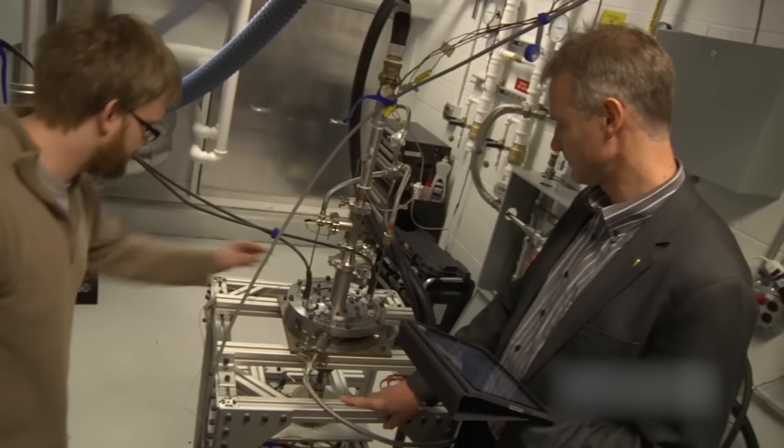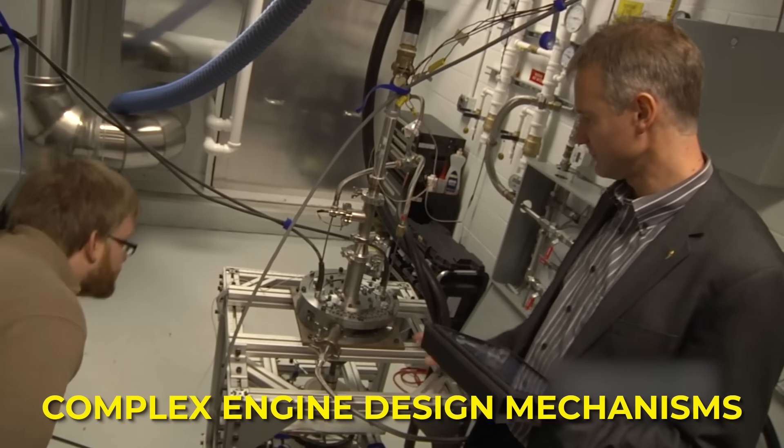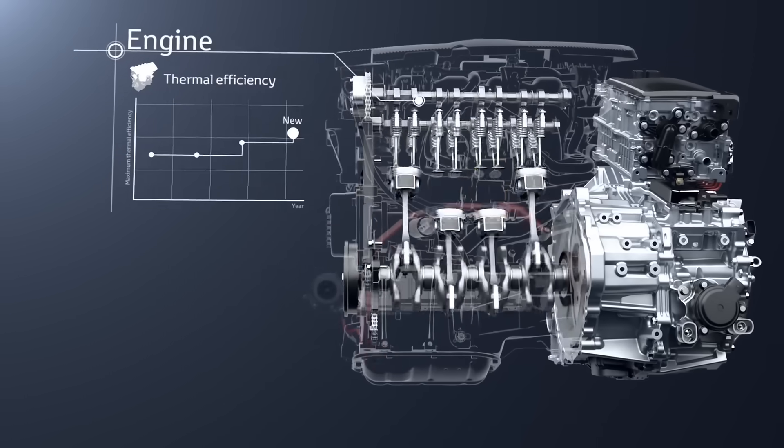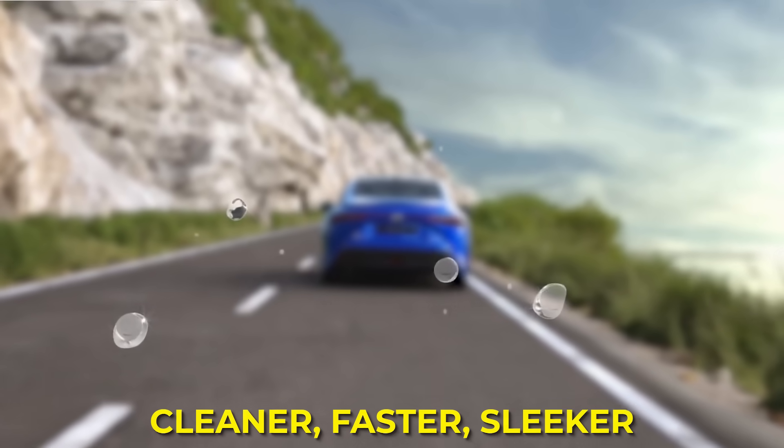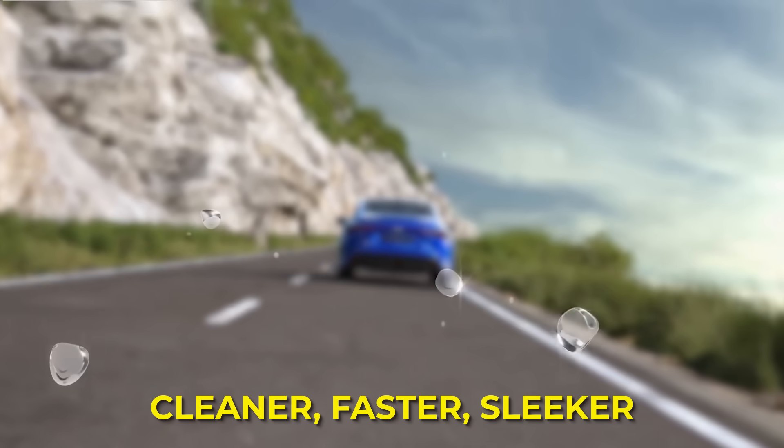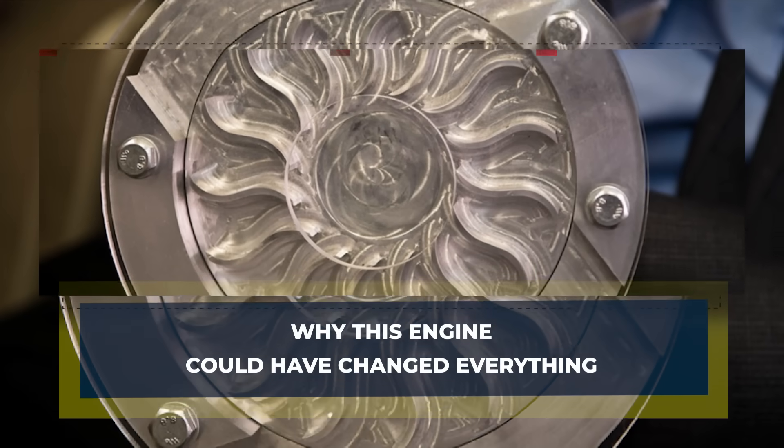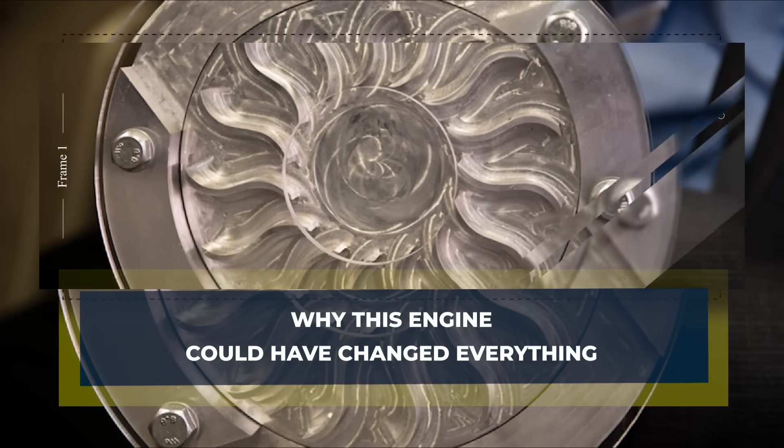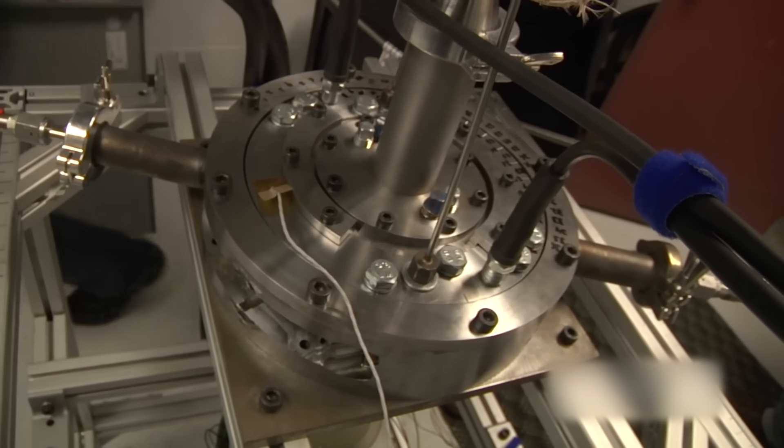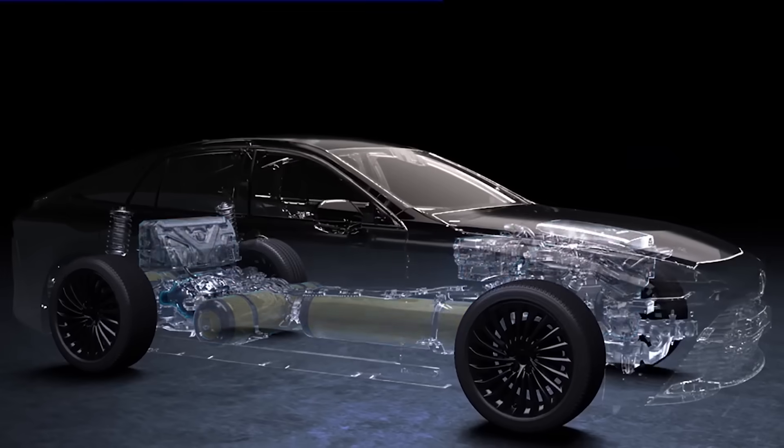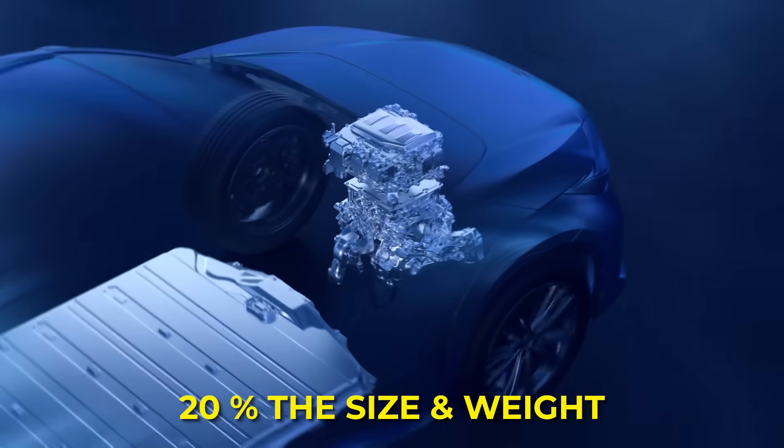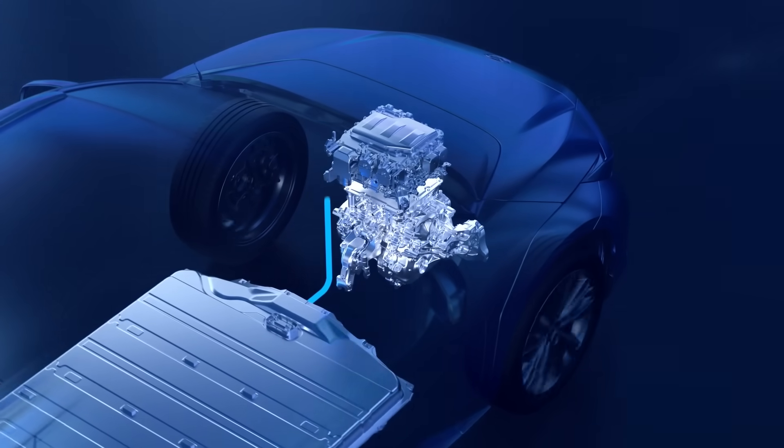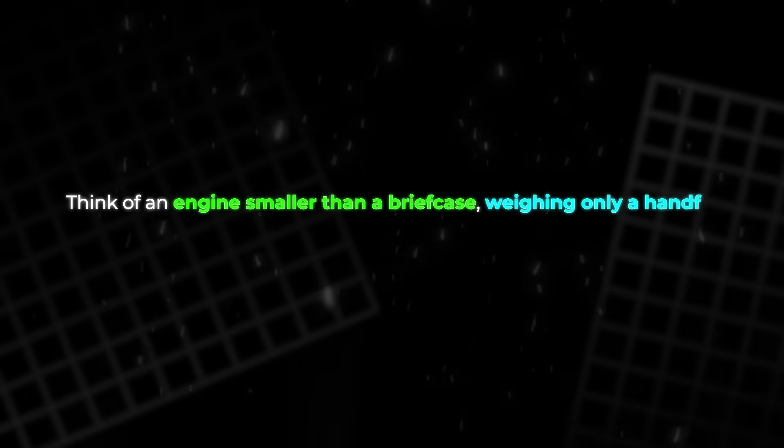Slow compression means more time for heat to leak. Rapid compression traps heat and uses it for combustion. That's why wave disc prototypes reached thermal efficiency levels close to 60 percent. That number is huge—it's nearly double the efficiency of many gasoline engines on the road today. It even rivals fuel cells.